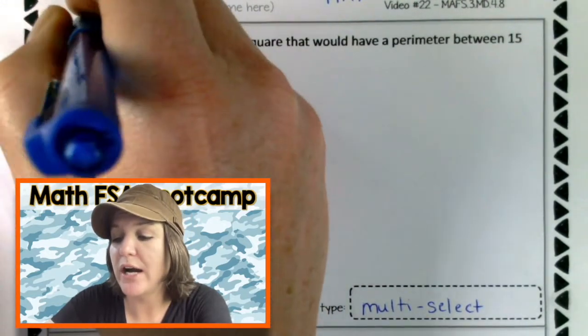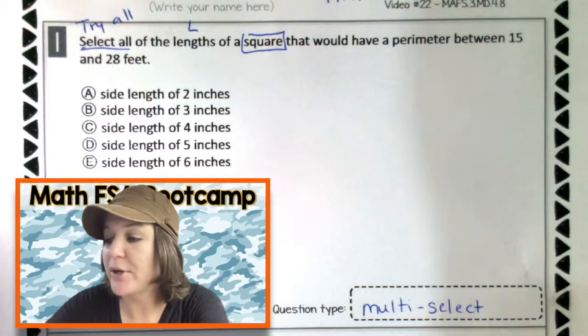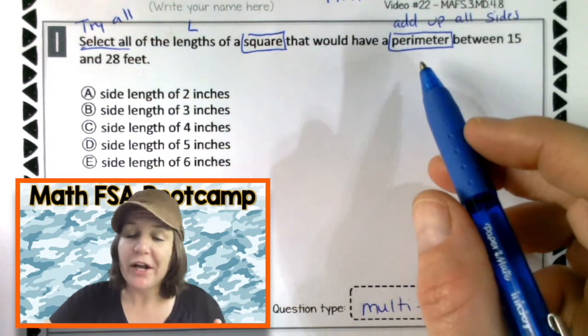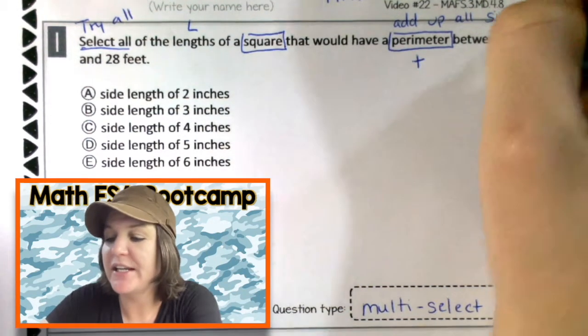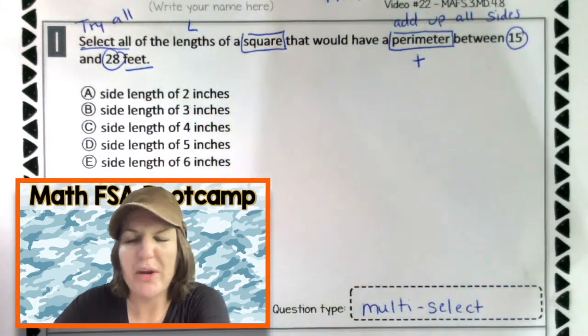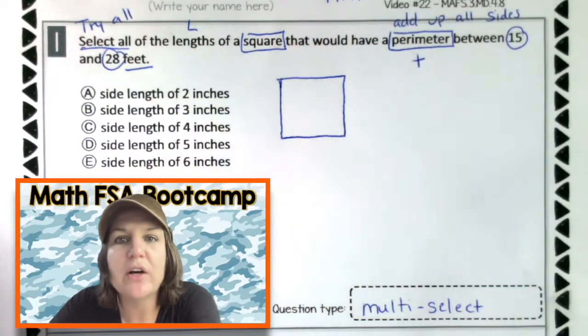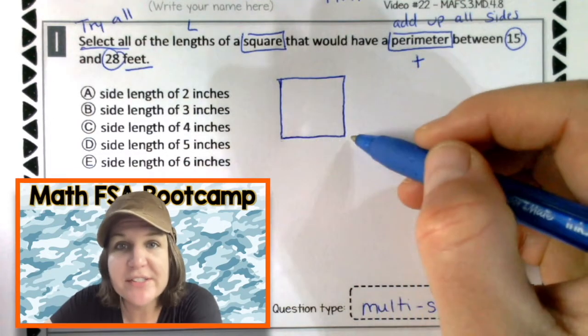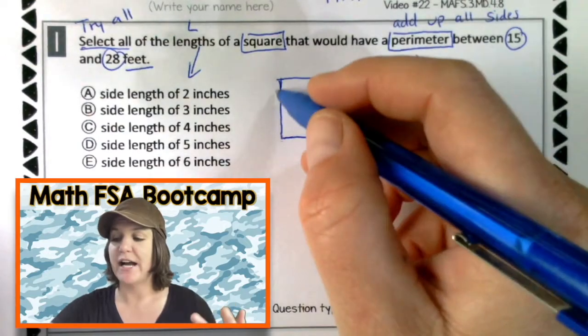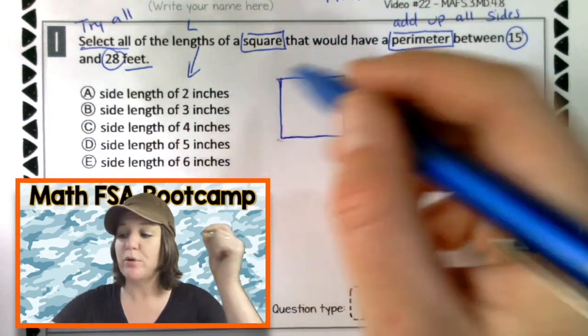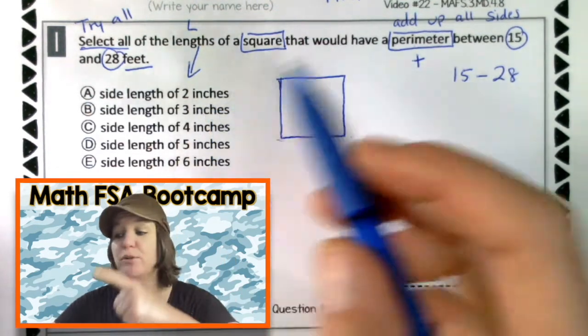It says select all of the lengths of a square that would have a perimeter. A perimeter means that we add up all the sides. Or, in other words, when we think of p-p-perimeter, we think of p-p-plus. Add up all the sides. That's right. Between 15 and 28 feet. All right, let me go ahead and draw this out and see if I got it. So, we have lengths of a square. Ooh, there's something special about a square. What is it? Yeah, all the lengths are the same size. They're equal. A square has four equal sides. So, these right here are the lengths of the square. Side lengths. And we need to pick the side lengths that would add up to a perimeter between 15 and 28 feet. So, what we need to do is check out all of these. See if when we add them all up, we get between 15 and 28 feet.